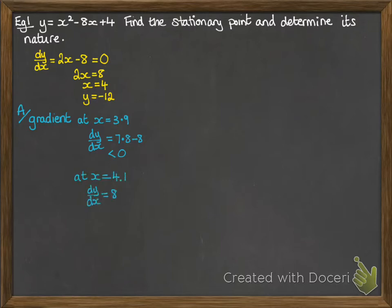If we put a little bit more, 4.1, into the gradient function, we get a positive answer. So the gradient has changed, and it looks like this. So if you think about 4 being in the middle, to the left of it the gradient was negative, at 4 it's equal to 0, and to the right of 4 was a positive gradient. So you can see the shape that's being created there gives us a minimum.